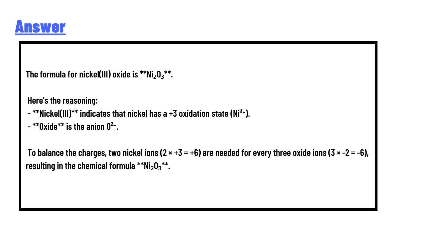The formula for nickel(III) oxide is Ni₂O₃. Here's the reasoning: Nickel(III) indicates that nickel has a +3 oxidation state. Oxide is the anion O²⁻. To balance the charges, two nickel ions (2 × +3 = +6) are needed for every three oxide ions (3 × -2 = -6), resulting in the chemical formula Ni₂O₃.